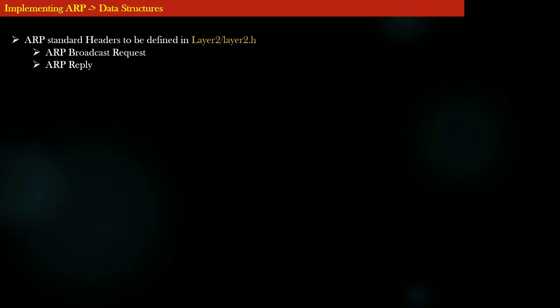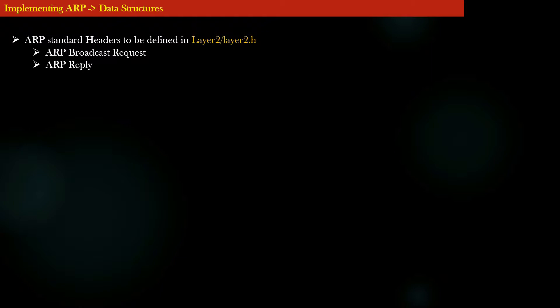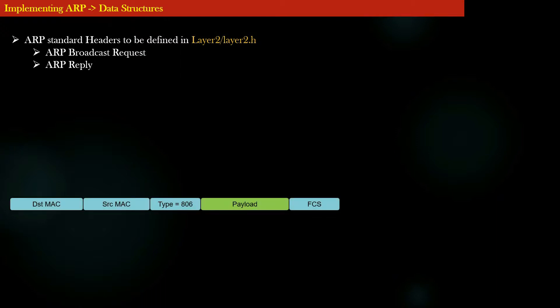We have already defined the standard Ethernet header format in the layer2.h header file. Next we will define the ARP standard headers in the same file — layer2/layer2.h. We will define the ARP broadcast request message and ARP reply message, which are the two basic ARP message types needed to accommodate our functionality in the project.